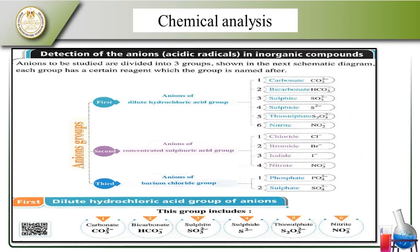We work with carbonates and bicarbonates, sulfides, thiosulfates, nitrites. Then the second group includes chlorides, bromides, iodides, and nitrides. After that, we have barium chloride, phosphides, and sulfides. Let's see what each one does in its reactions.